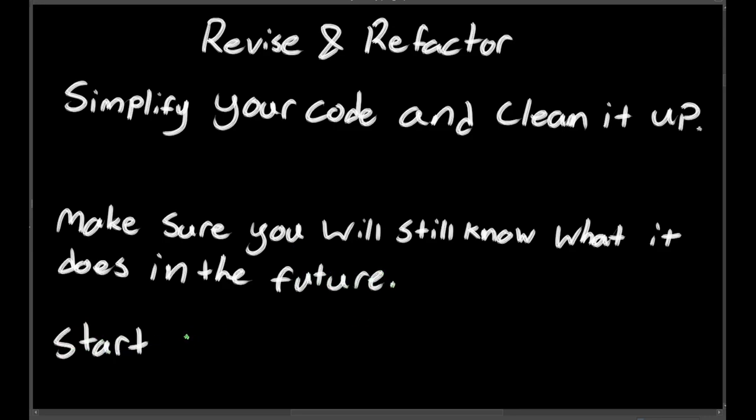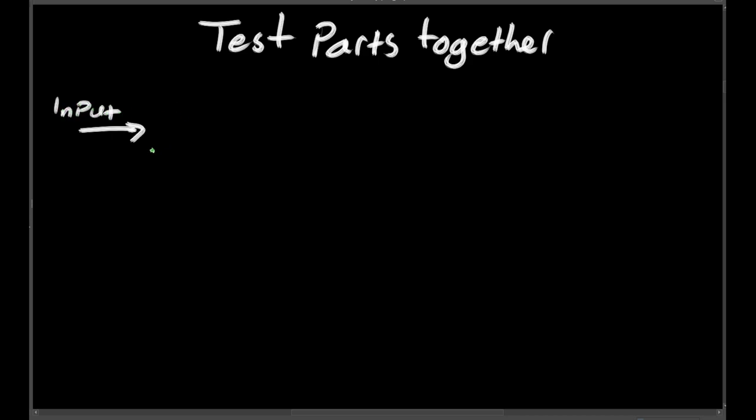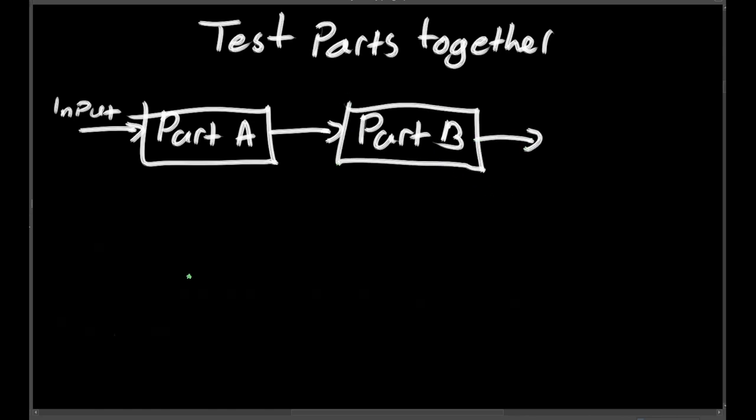You're going to want to repeat all the previous steps for each of the parts in your original problem, but once they're all working as standalone components, you can start testing pieces together. Connect the parts one at a time, and run through some tests to make sure there aren't any problems. You should go through all of the same troubleshooting steps you used for the individual parts, but you also want to make sure the problems aren't caused by how the parts are connected.